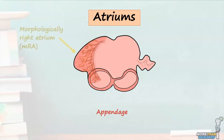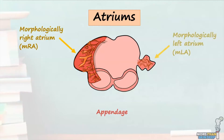The morphologically right atrium is characterized by a broad-based and triangular atrial appendage with an extensive distribution of pectinate muscle, whilst the morphologically left atrium is characterized by a narrow and tubular atrial appendage with pectinate muscle confined solely within the appendage. As a result, we find pectinate muscle all around the right atrium whereas no pectinate muscle can be seen outside the appendage in the left atrium.